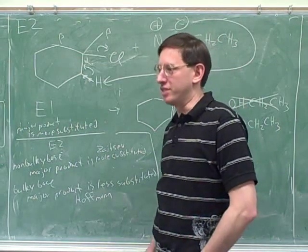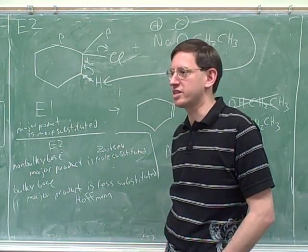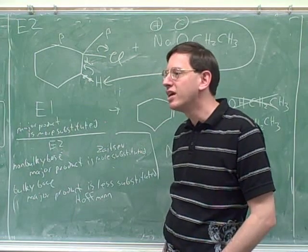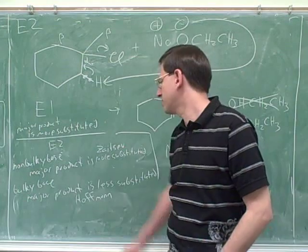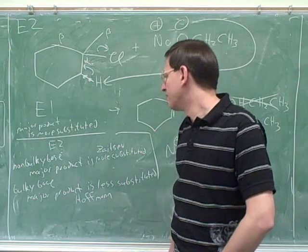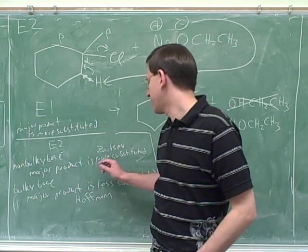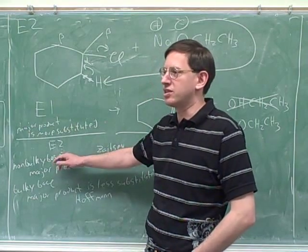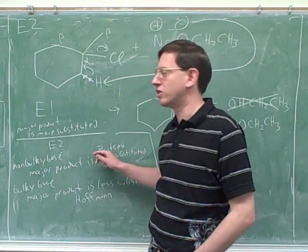What does it mean if something is more substituted? It means it has more stuff around it, which means it has more steric hindrance. Well, if there's a lot of steric hindrance around the beta carbon, and there's also a lot of steric hindrance around the base itself, then they're not going to be able to get close enough to make the reaction. On the other hand, even if there is a lot of steric hindrance around the beta carbon, as long as the base doesn't have too much steric hindrance, it can still reach in and get that hydrogen over here.